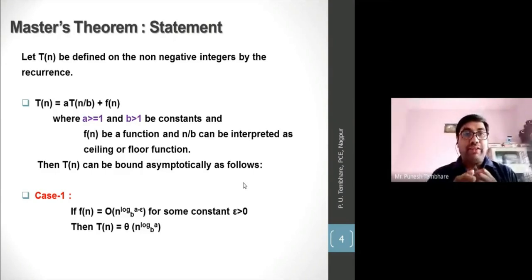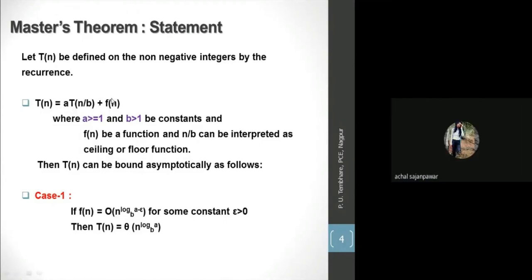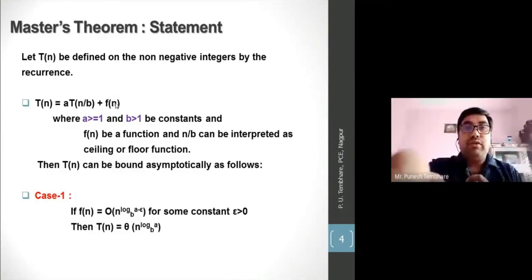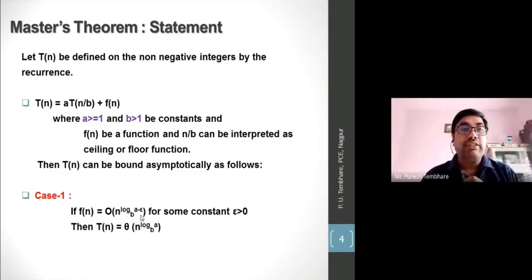In the general format T(n) = aT(n/b) + f(n), the term f(n) is the last additive term. We need to compare this f(n) with n^(log_b(a) − ε). If subtracting some epsilon from n^(log_b(a)) still gives something equal to f(n), it implies n^(log_b(a)) is greater than f(n).